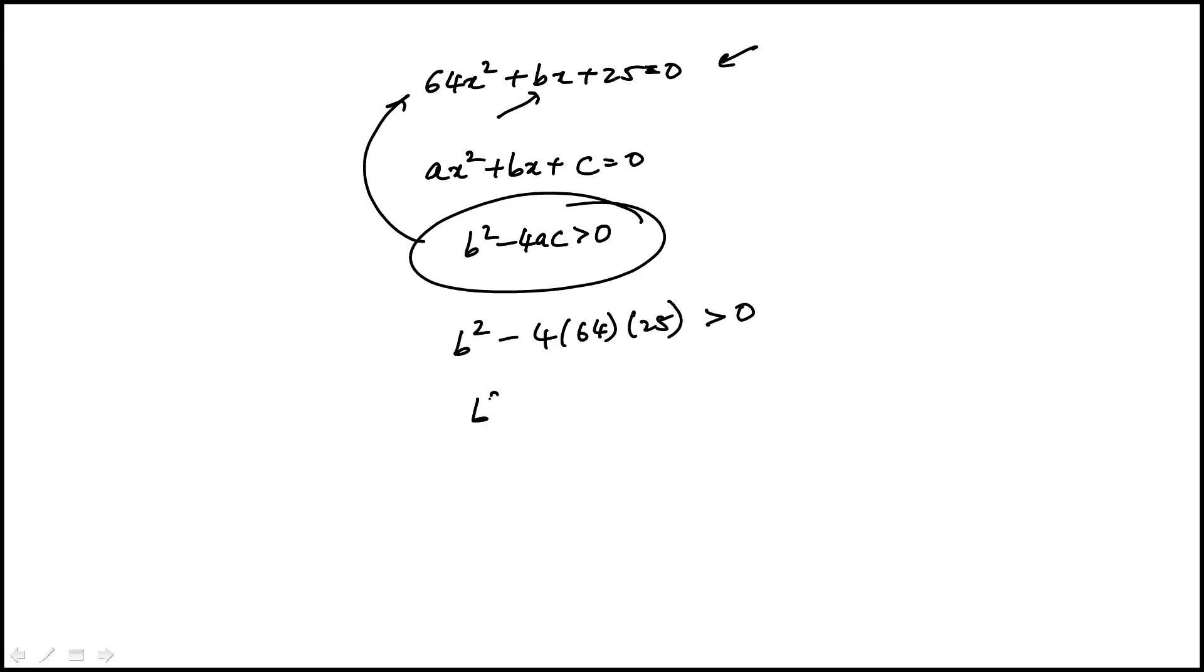That's the condition which means B squared is greater than 4 times 64 times 25. And because it's a square you can use a calculator here but I'm just trying to reduce my work.